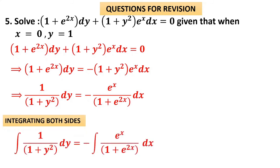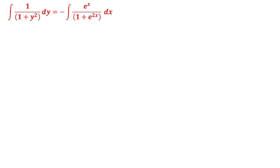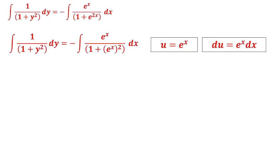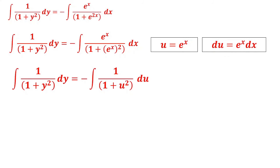Integrating: integral of 1/(1+y²)dy = −integral of e^x/(1+e^{2x})dx. On the right-hand side, visualize e^{2x} as (e^x)², so the denominator is 1+(e^x)². The numerator e^x is the differentiation of e^x. Using substitution u = e^x, du = e^x dx, we get: 1/(1+y²)dy = −1/(1+u²)du. Both use the formula integral dx/(1+x²) = tan⁻¹x, giving tan⁻¹y = −tan⁻¹u + c.